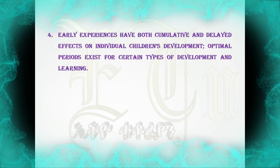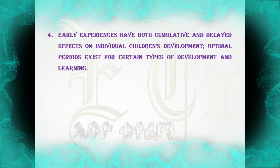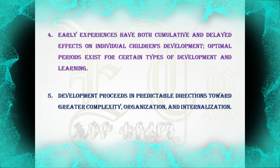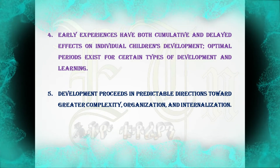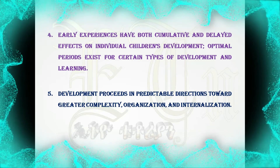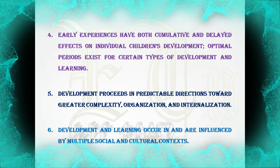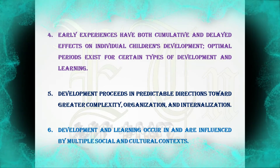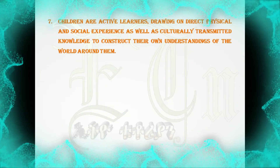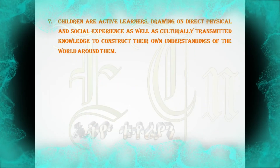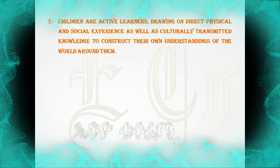Four: Early experiences have both cumulative and delayed effects on individual children's development; optimal periods exist for certain types of development and learning. Five: Development proceeds in predictable directions toward greater complexity, organization, and internalization. Six: Development and learning occur in and are influenced by multiple social and cultural contexts.